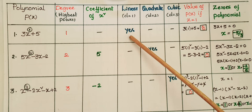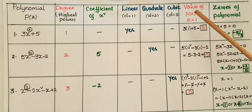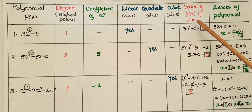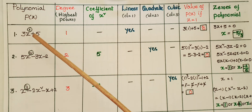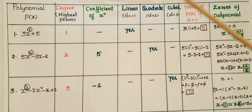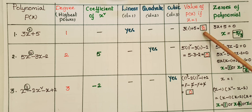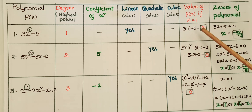It is a linear polynomial. The value of the polynomial: if x is equal to 1, replace the variable value as 1, then 3 into 1 plus 5 is equal to 8. So this is the value of the polynomial when x is equal to 1.